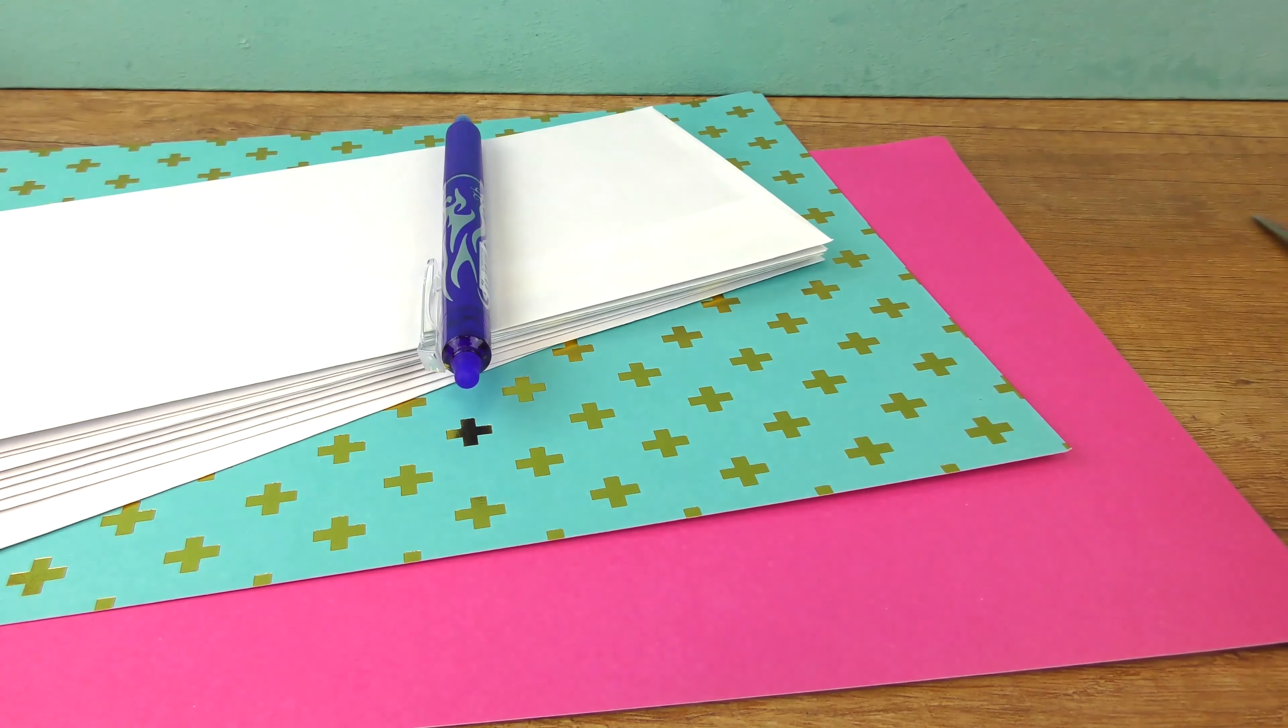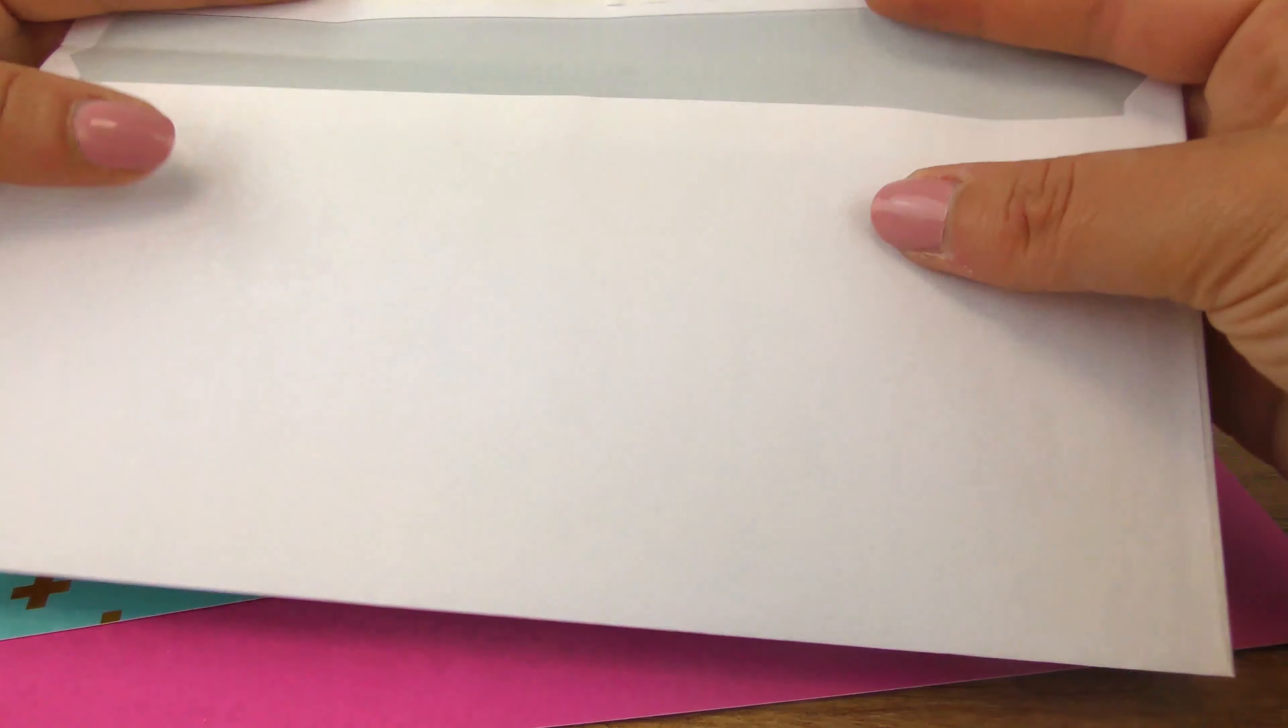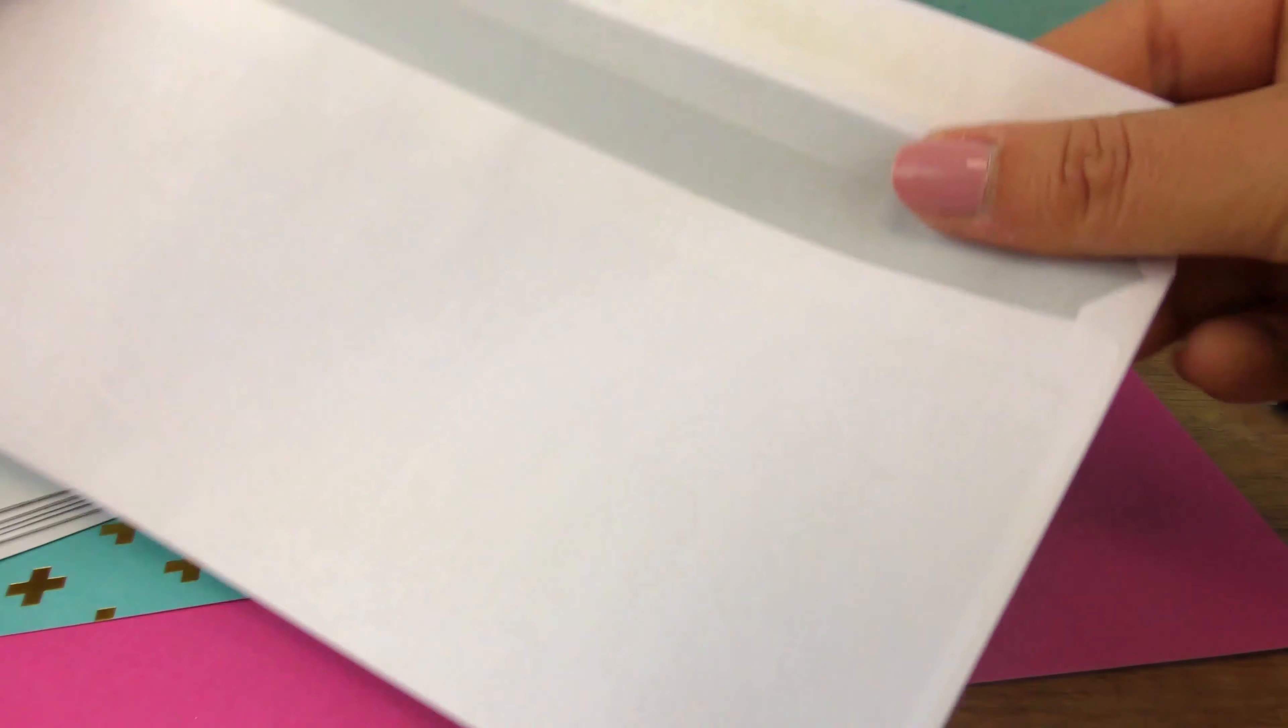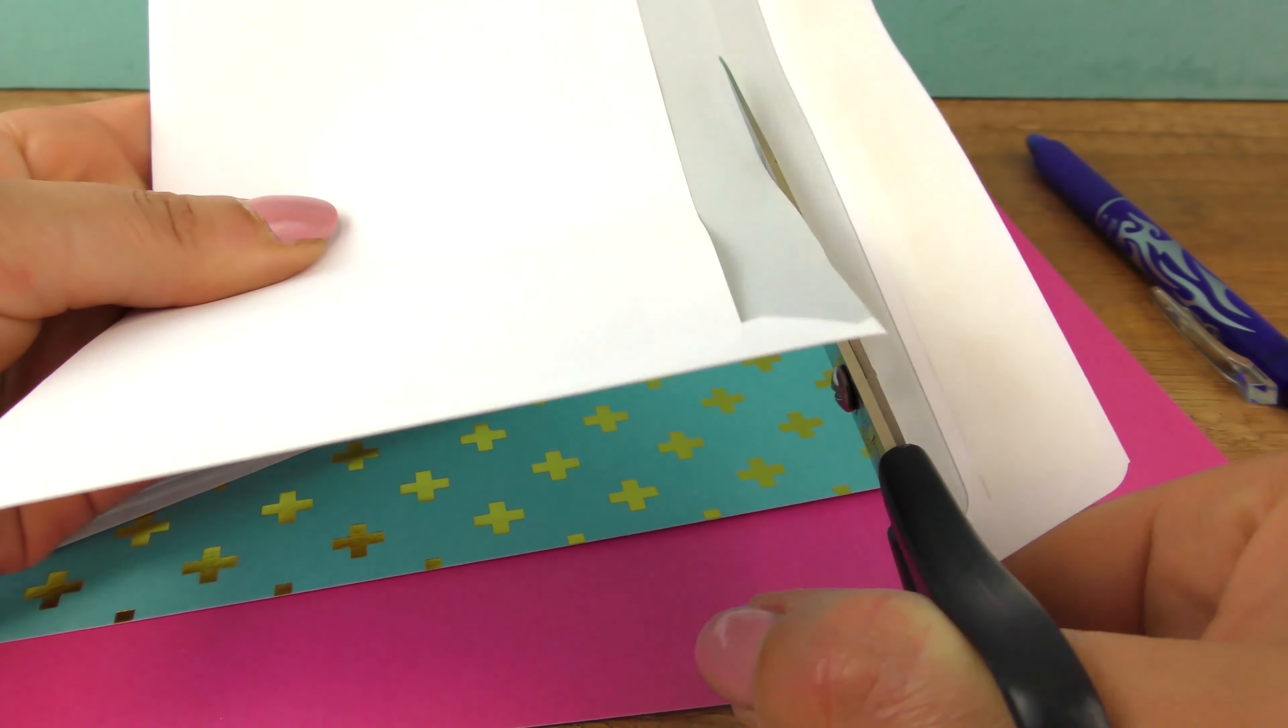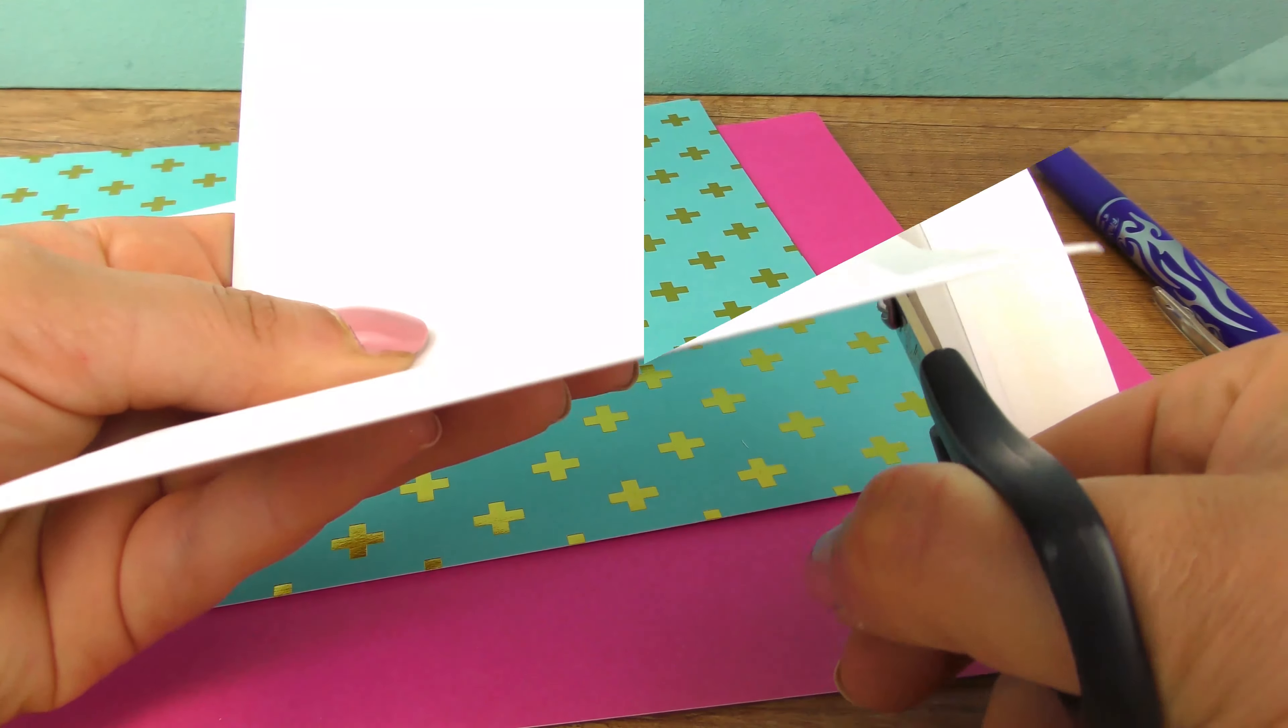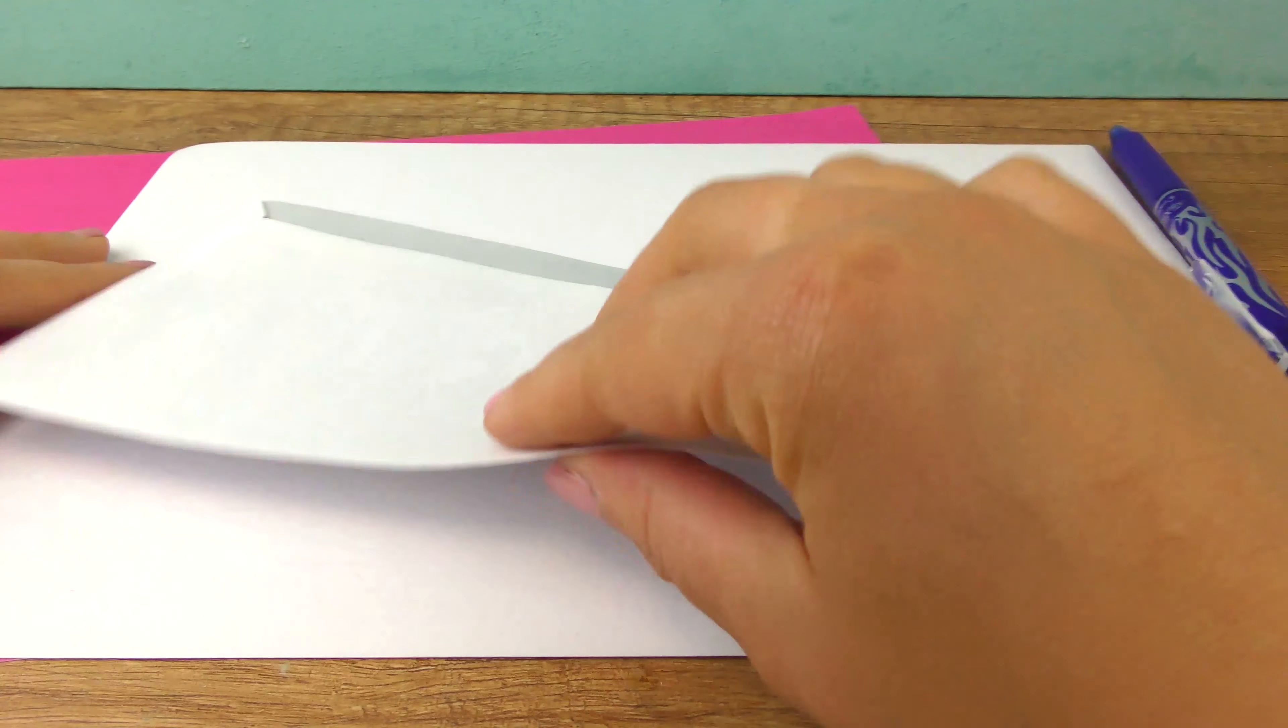Then we need some glue, a pen, and our scissors. That's it. Let's start. I don't need these top sections of my envelopes, so I'll take one envelope and mark the size on my cardboard paper.